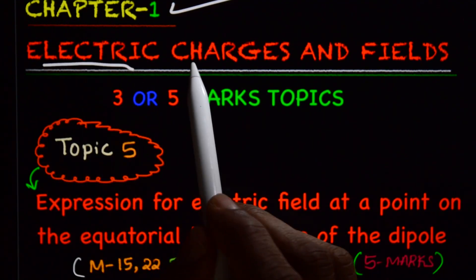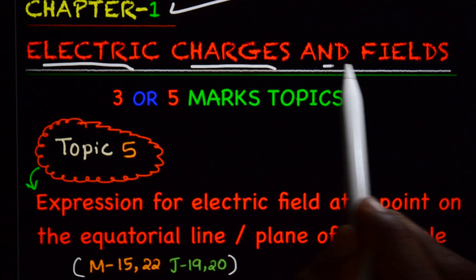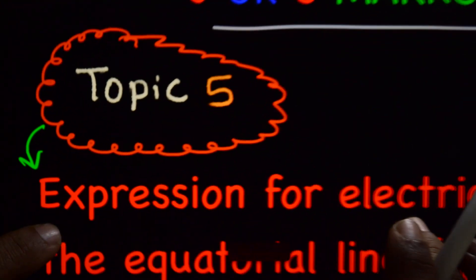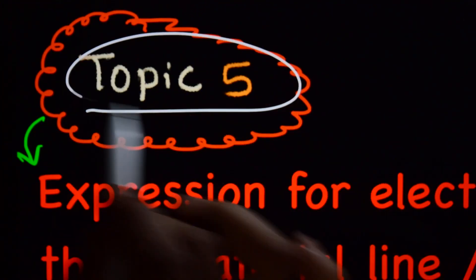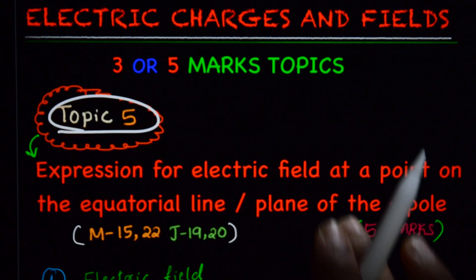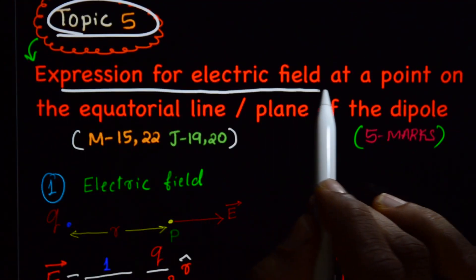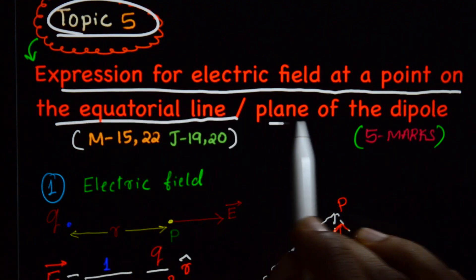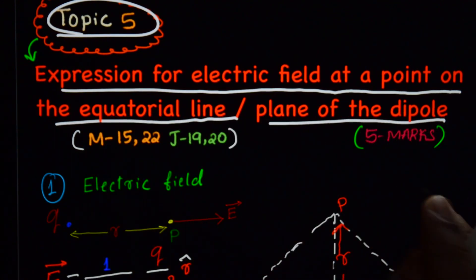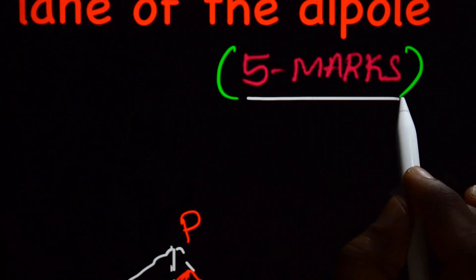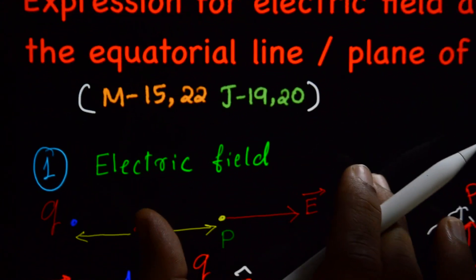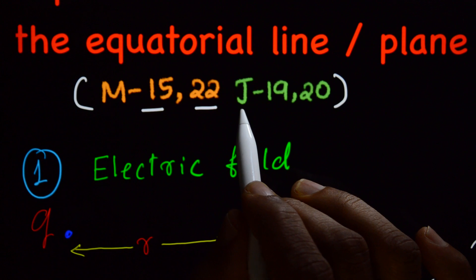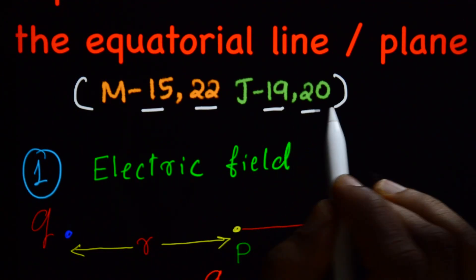Chapter 1: Electric Charges and Fields — 3 or 5 marks topics. This is topic number 5: expression for electric field at a point on the equatorial line or plane of the dipole. This is a 5-marks topic. It appeared in March 2015, 2022, June or July 2019, and 2020.